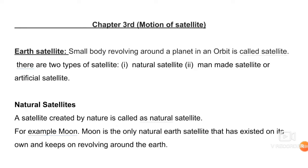For your notes, write this definition: an earth satellite is a small body revolving around the earth in an orbit, which is called a satellite. Satellites are of two types: natural satellite and man-made satellite, also called an artificial satellite. The definition of a natural satellite: a satellite created by nature is called a natural satellite, for example, the moon.